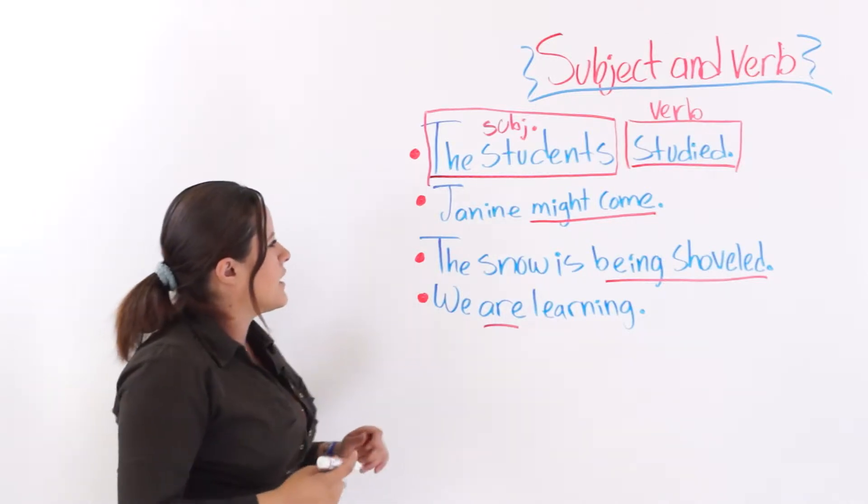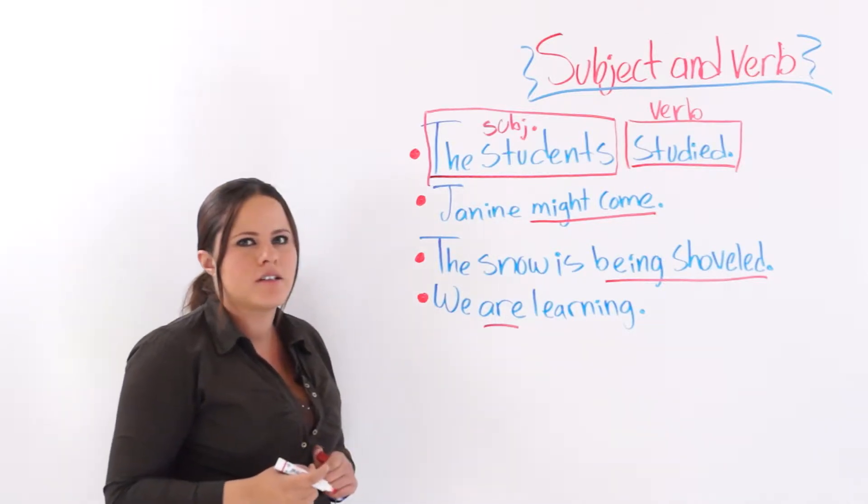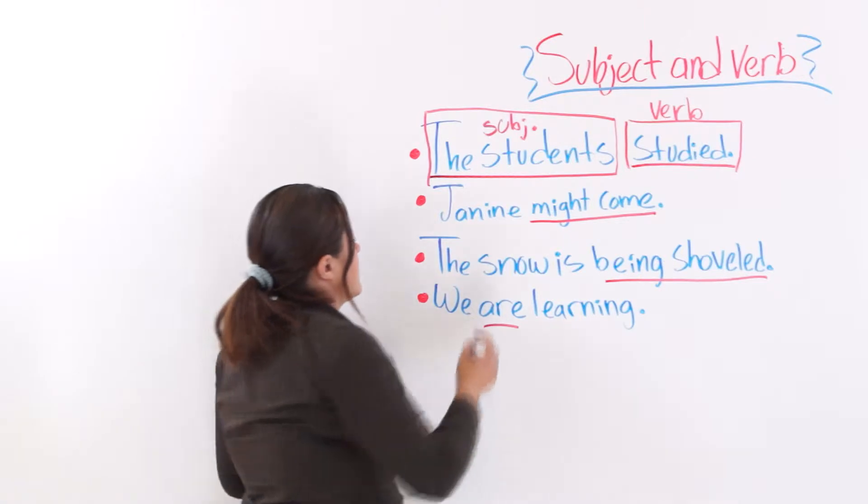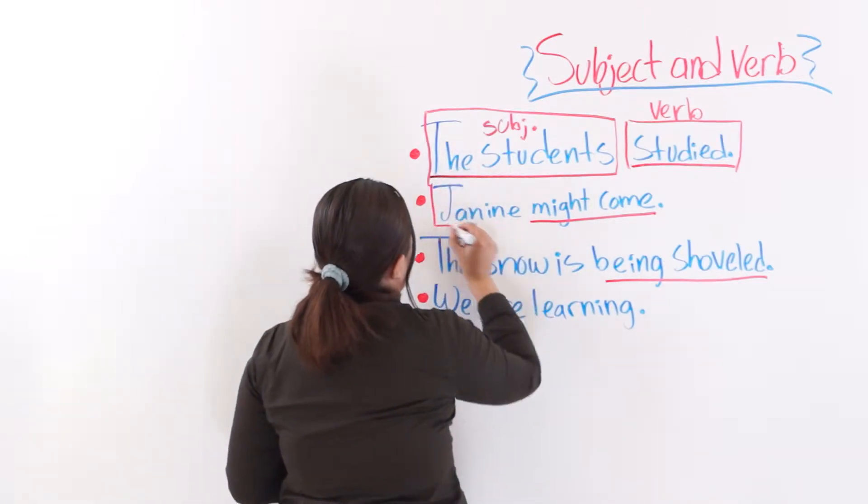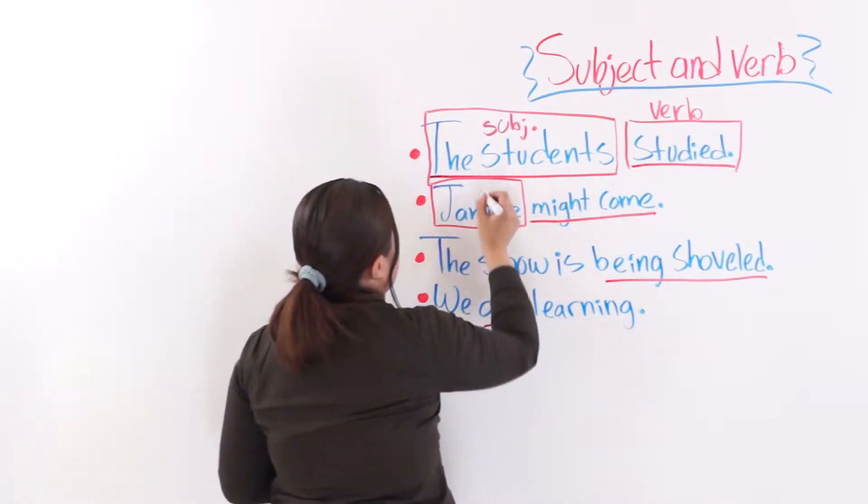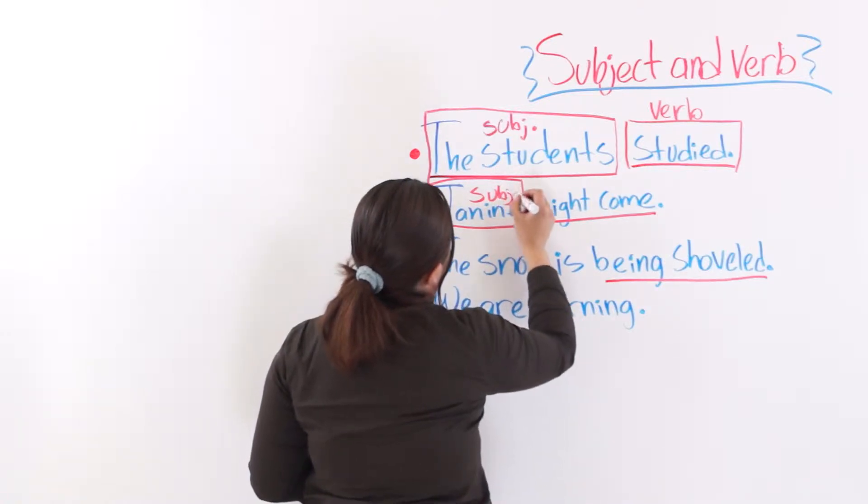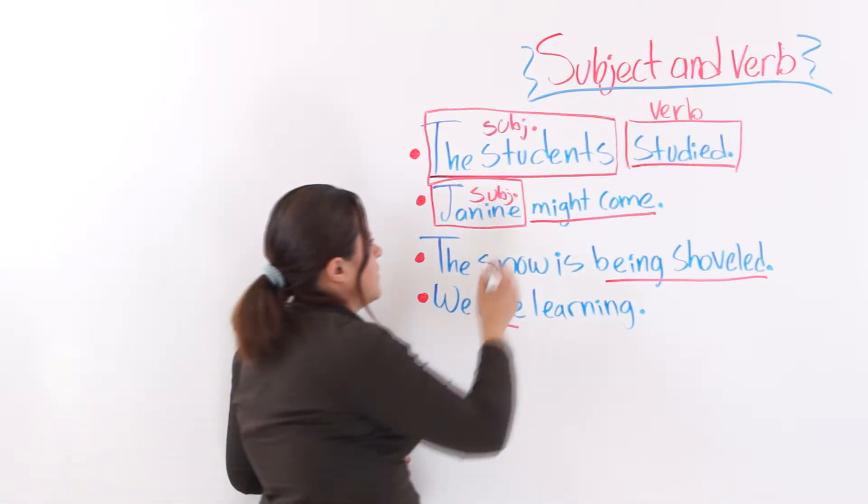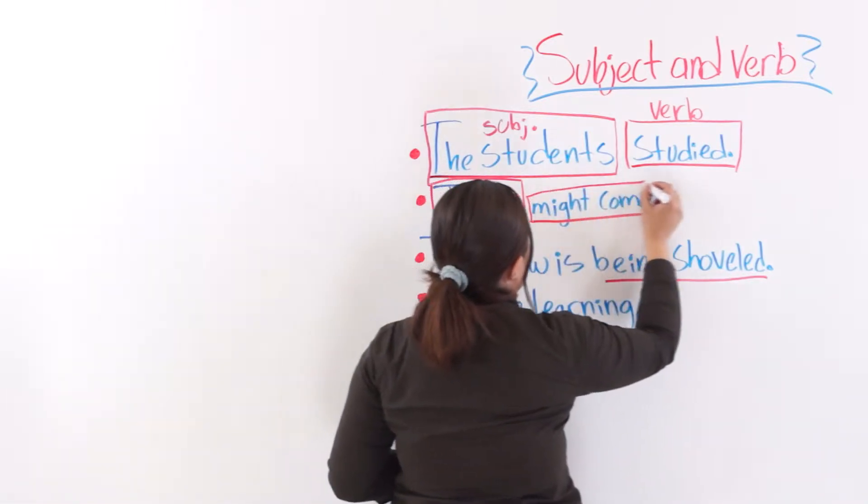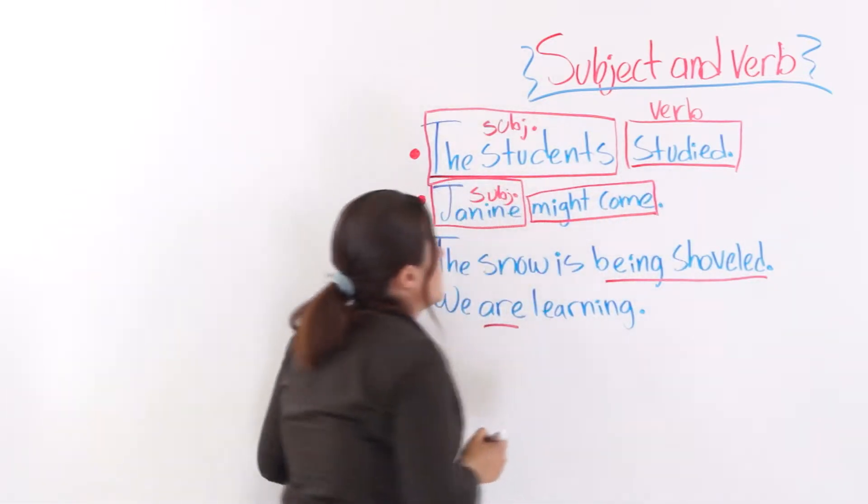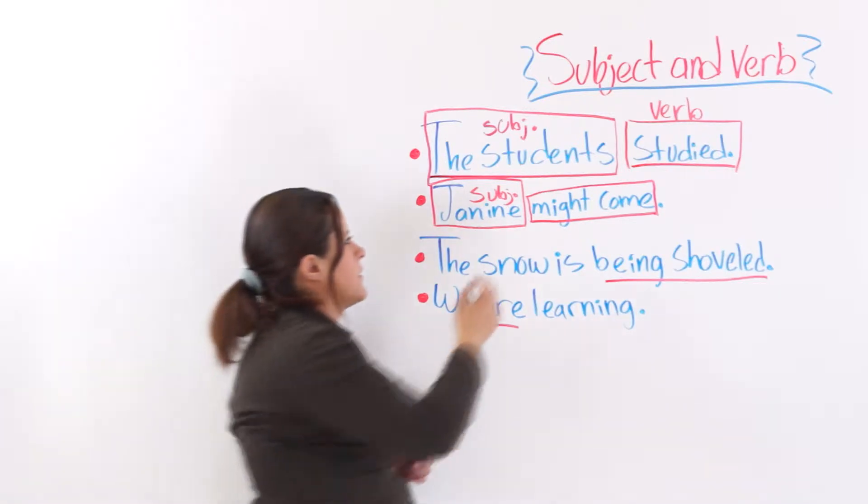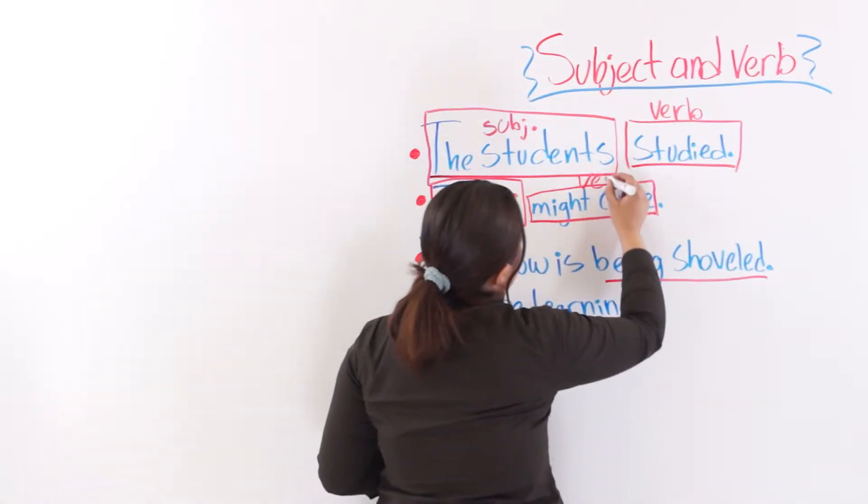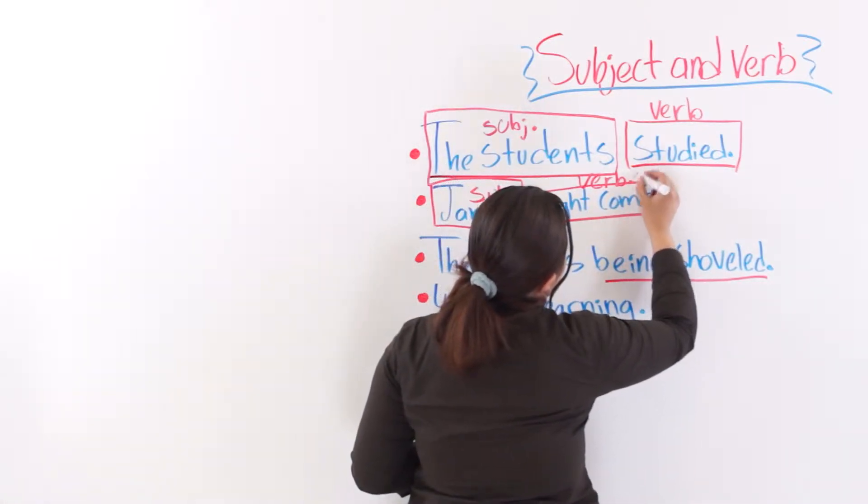The second one says, Janine might come. Janine is our subject here. And might come would be our verb phrase or our verb. Verb phrase.